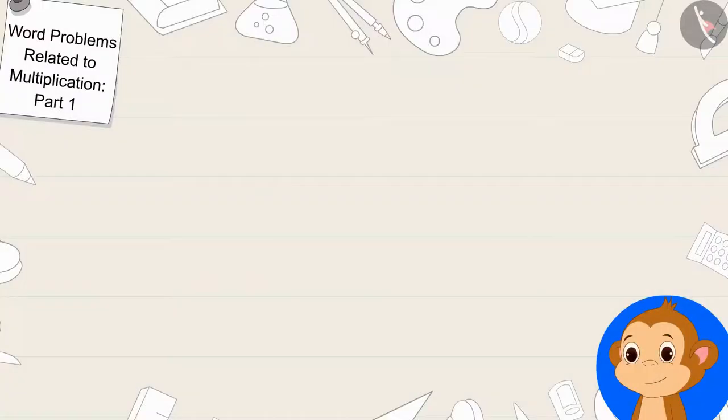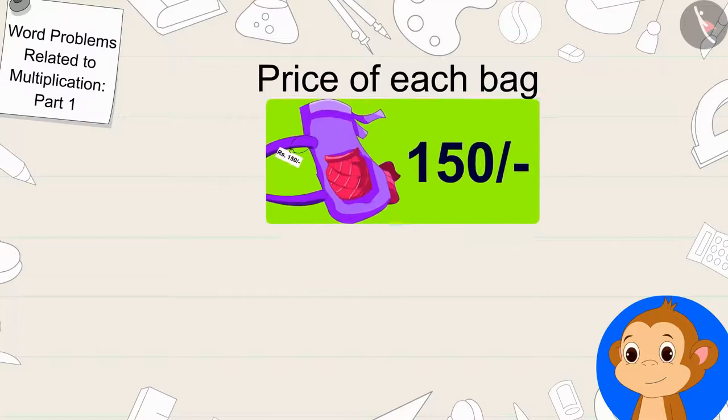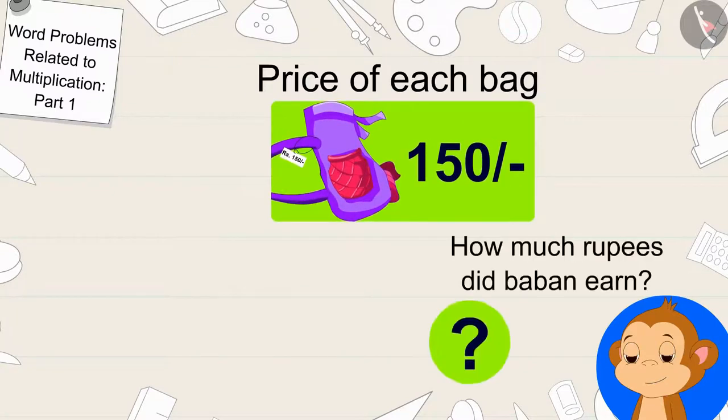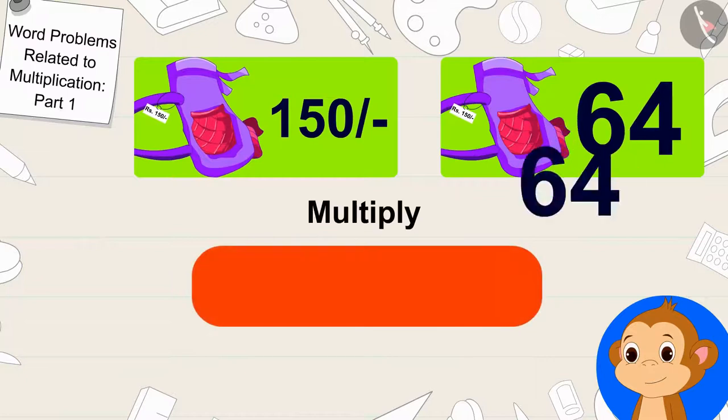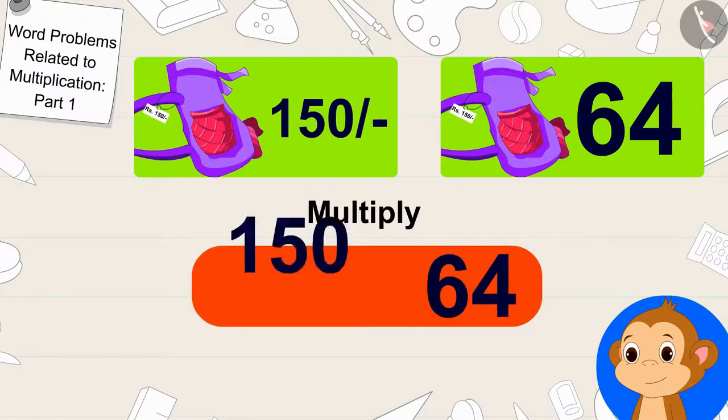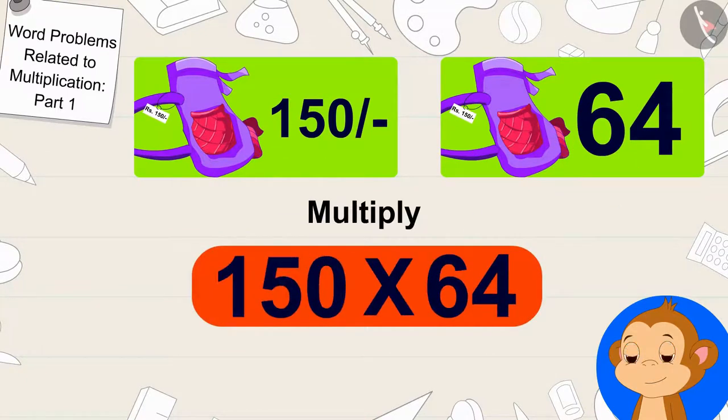Babban sells each bag for 150 rupees. To find out how many rupees Babban earned by selling 64 bags, we only have to multiply 64 bags by 150 rupees. Children, can you tell what the answer will be?